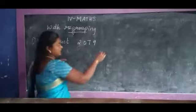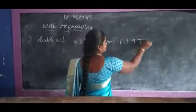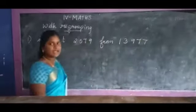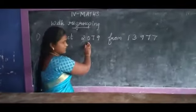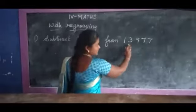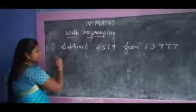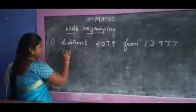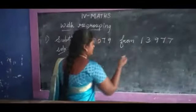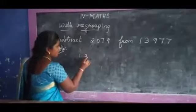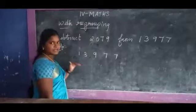The first problem is: subtract 2079 from 13977. So first you have to write the number from. First is 13977. Next you have to write the place values.